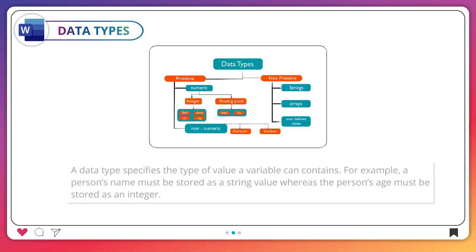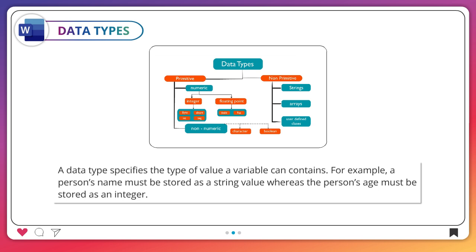Data Types. A data type specifies the type of value a variable can contain. For example, a person's name must be stored as a string value, whereas the person's age must be stored as an integer.